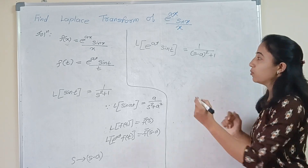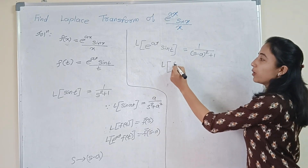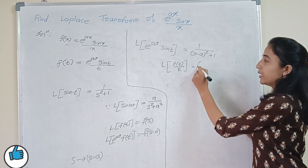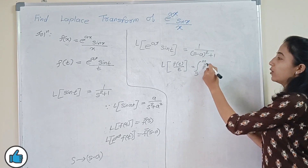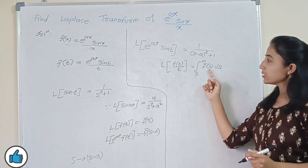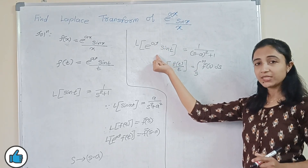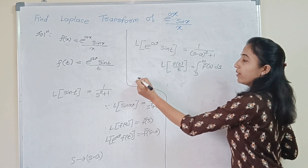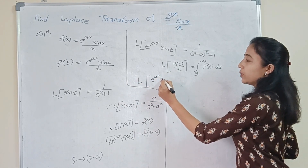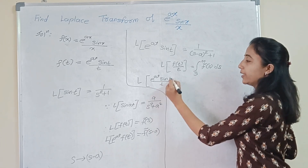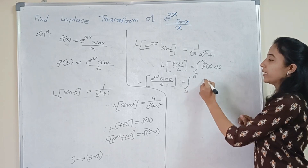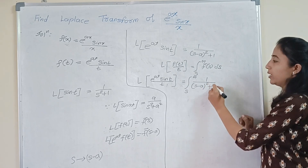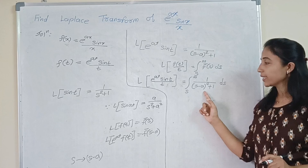So we apply the division by t property. The Laplace transform of f(t) divided by t is the integral from s to infinity of F-bar(s) ds. On the left hand side, if you divide by t, on the right side we integrate that term. Here our left hand side term is e raised to the power at into sin t divided by t. So on the right hand side we take the integral from s to infinity of 1 upon (s minus a) squared plus 1, ds.